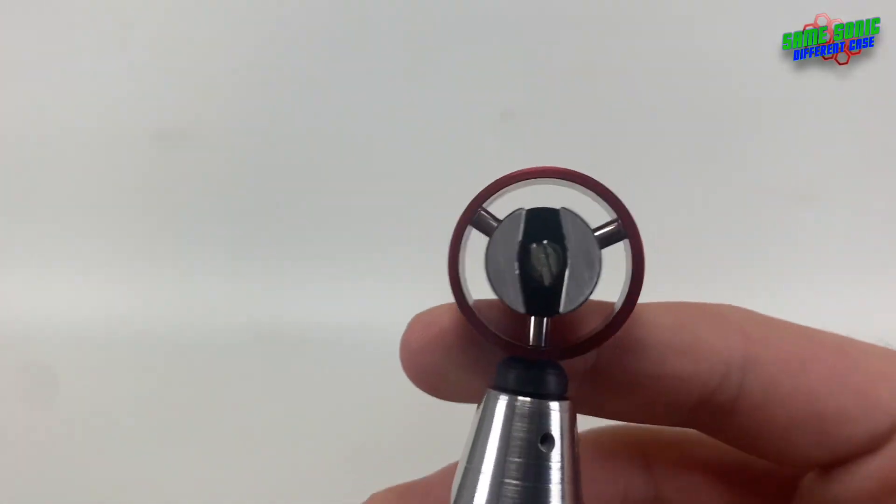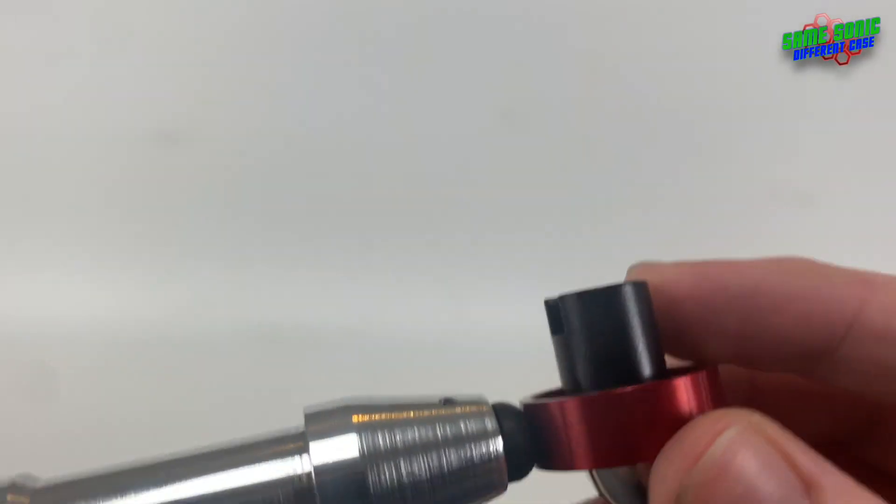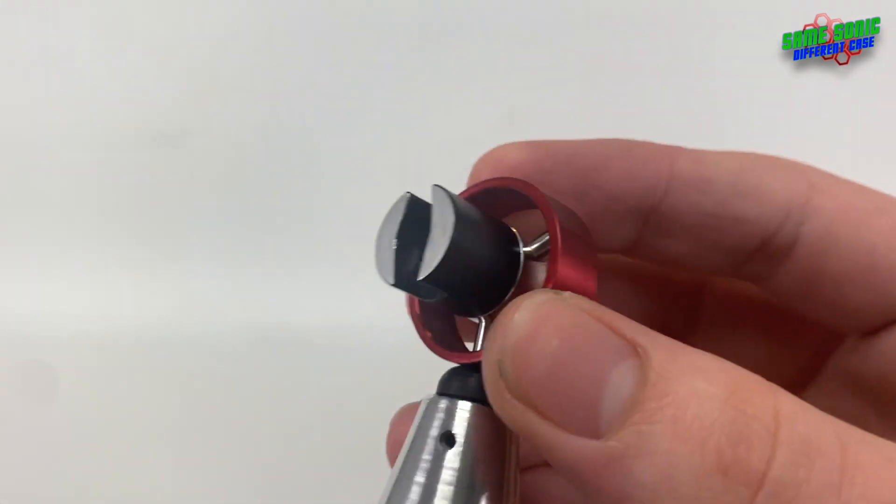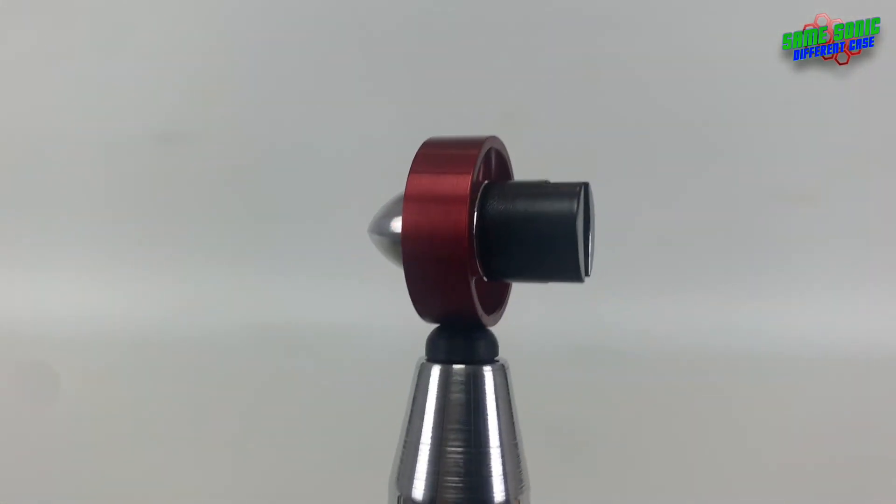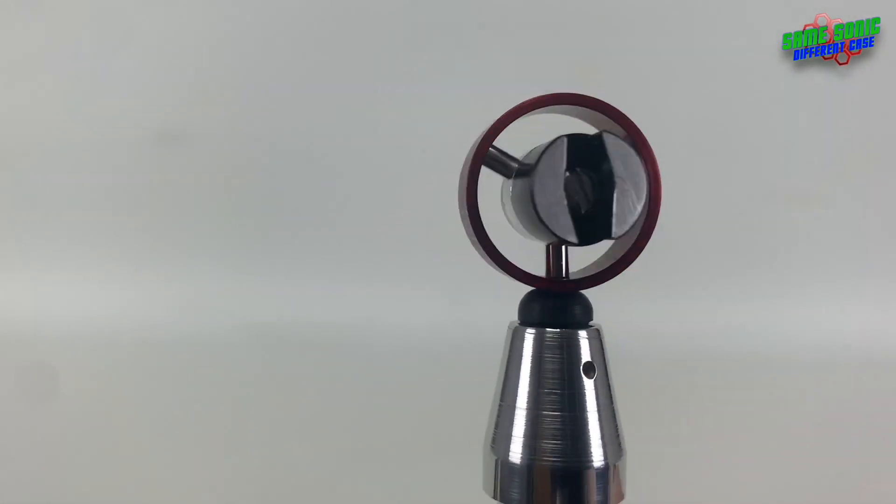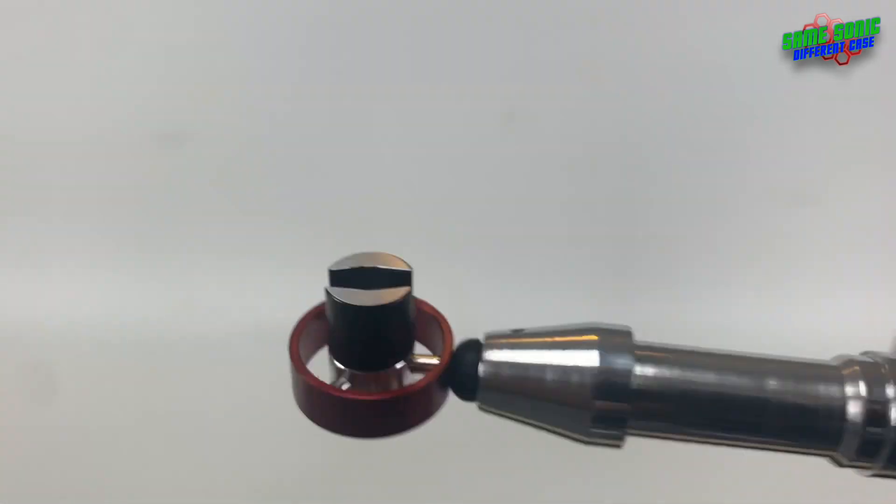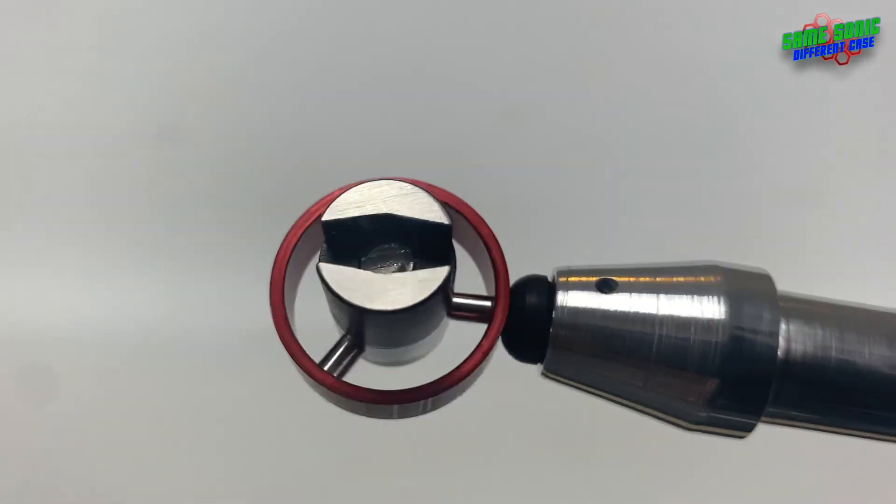You can see the back of the emitter here, where it's the, well we'll call it the magnet section, even though it's not a real magnet, but I suppose it was on the real prop, but here it's just, you know, aluminium, really nice.